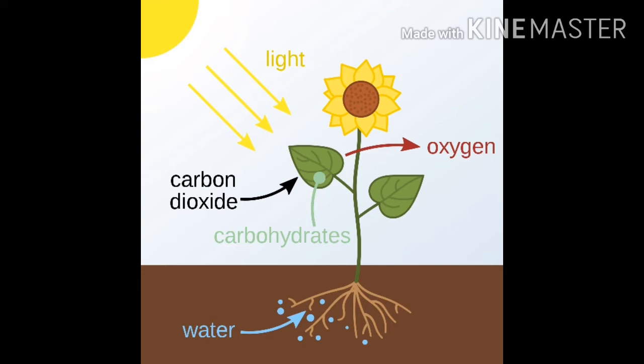Living things grow and change. They respond to changes around them. Most plants have a green substance called chlorophyll in their leaves. It enables them to make their own food using sunlight, carbon dioxide from the air, and water from the soil. This process is called photosynthesis.